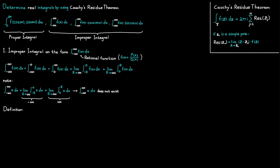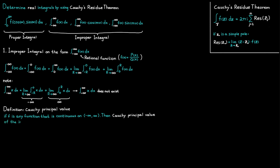We can actually do that by using Cauchy's principal value. If a function f is any function that is continuous from minus infinity to infinity, then Cauchy's principal value of the integral of f from minus infinity to infinity is denoted and defined using the letters PV to denote the principal value of the integral.